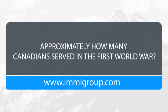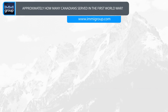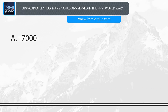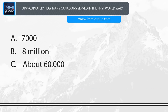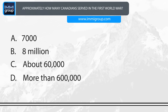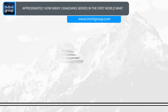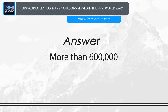Approximately how many Canadians served in the First World War? A. 7,000. B. 8,000,000. C. About 60,000. D. More than 600,000. Answer: More than 600,000.